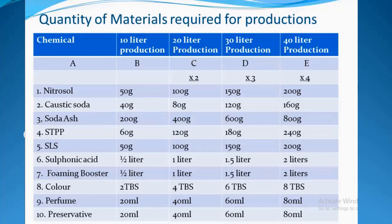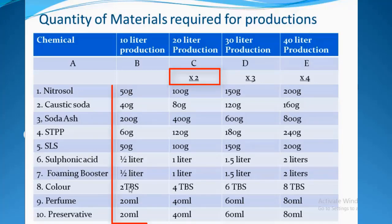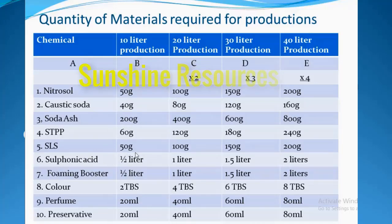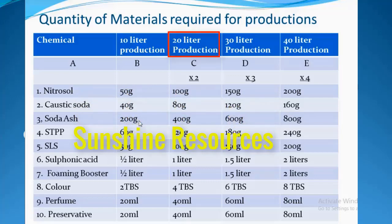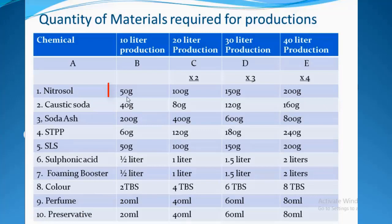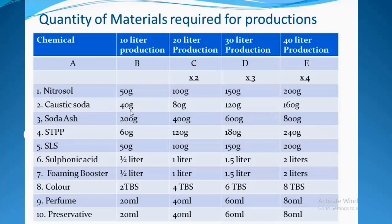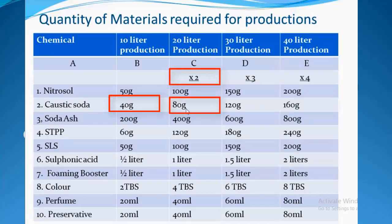If you want to produce 20 liters of liquid soap, all you do is multiply the quantities in column B by 2. For example, nitrosol is 50g × 2 = 100g. For caustic soda, to produce 10 liters I need 40g, so to produce 20 liters I multiply 40 by 2 to get 80g of caustic soda.